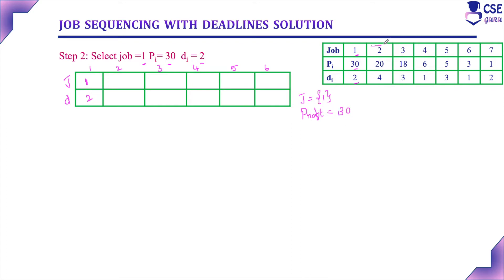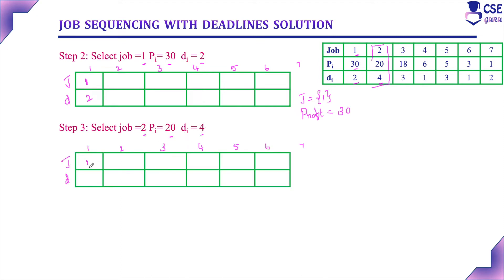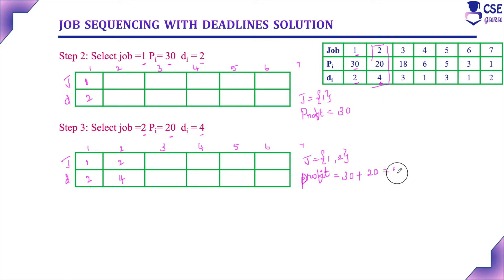Next, consider the second job. Its deadline is 4. The first job is assigned to the computer for the second unit of time, and the second job's deadline is 4 units of time, so we can consider this job as well. Select job 2: its profit is 20 and deadline is 4. Since the first job's deadline is 2 and the second job's deadline is 4, we add job number 2 to the job subset. The total profit so far is 30 plus 20, which equals 50.